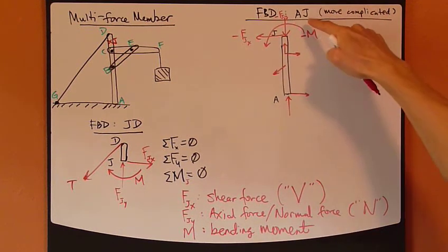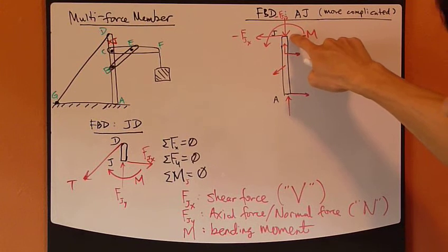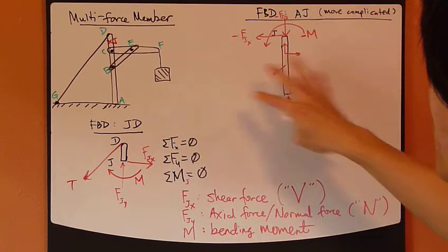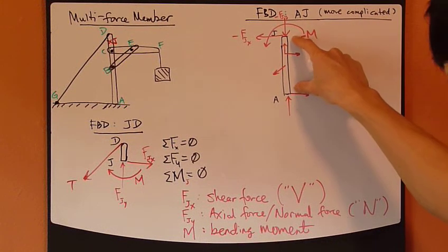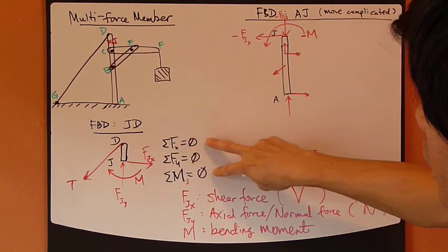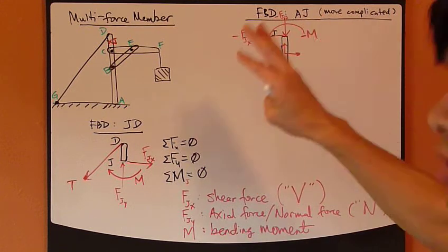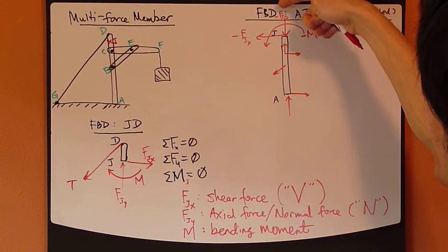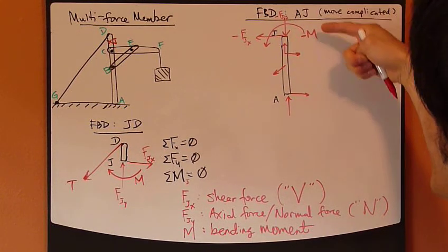Now, the important thing here is these three guys at J. Same as this. This whole free-body diagram for this section AJ has to be in equilibrium, which means that these three equations must be satisfied. Which also means that at J, we also have these three things going up: FJX, FJY, and M.